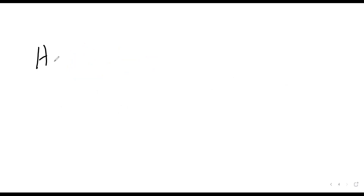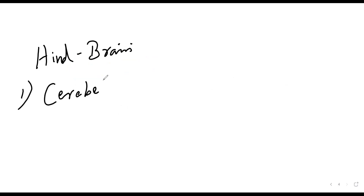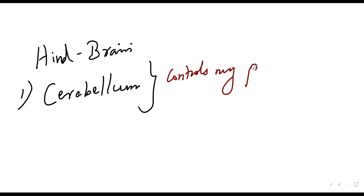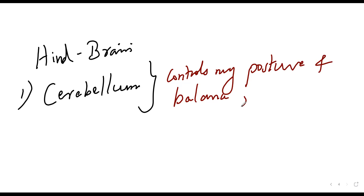The third part is the hindbrain. It has mainly three parts. The first one is the cerebellum, which controls posture, balance, and coordinated actions like writing.